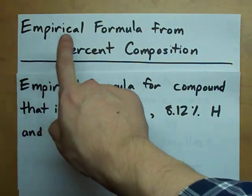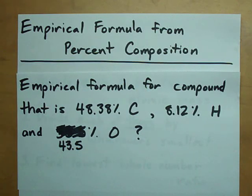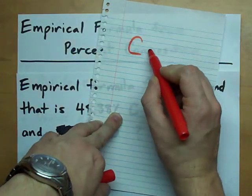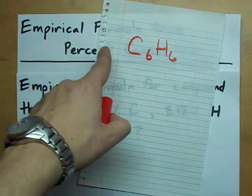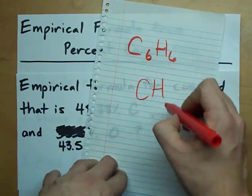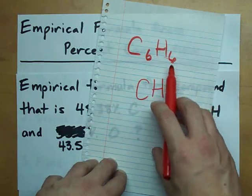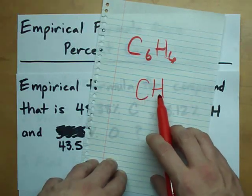The empirical formula that we're asked for here is simply the formula with the lowest whole number subscripts. What I mean by that is, suppose that this compound ended up being C6H6. The empirical formula for this is simply CH, because you keep the ratio of 6 to 6, but you reduce it down to the lowest possible whole numbers, 1 to 1.